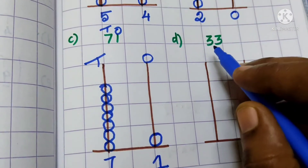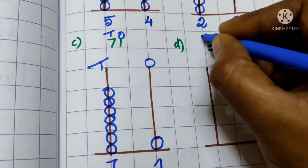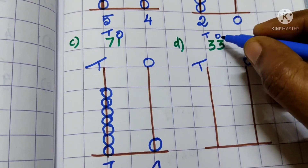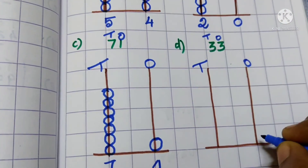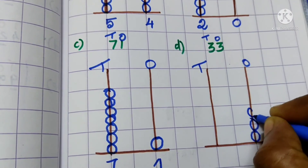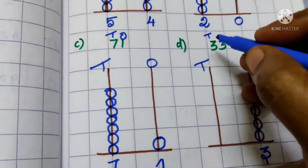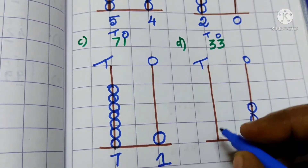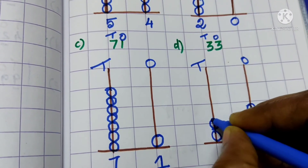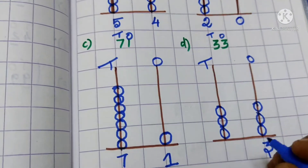And the last one: 33. Put the place value — 1's and 10's. How many 1's are there? 3. So we draw 3 beads on the 1's place value. Write 3. And how many 10's? Again 3. So here also we draw 3 beads. 3 tens and 3 ones — the number is 33.